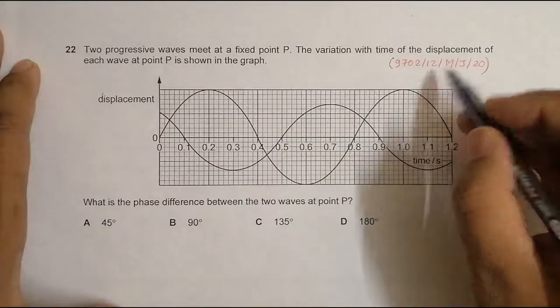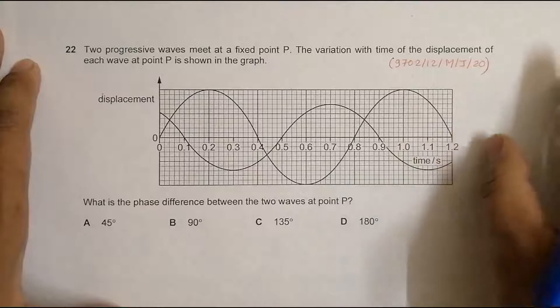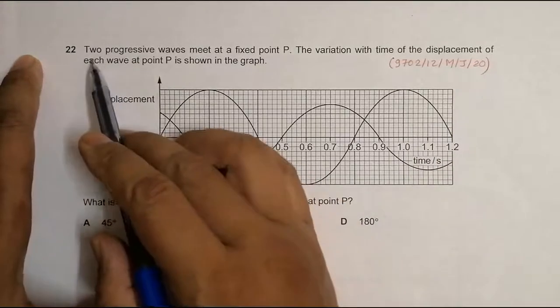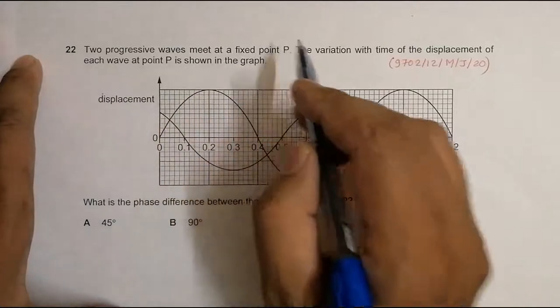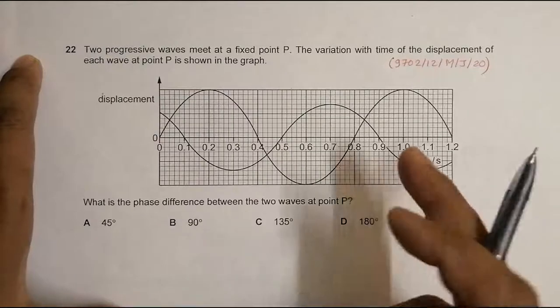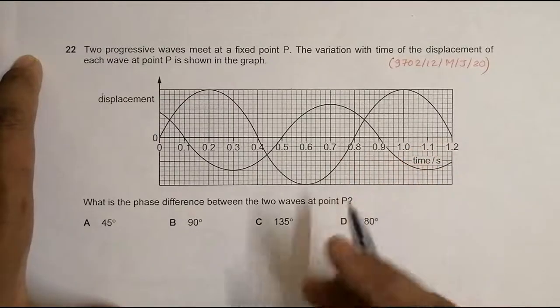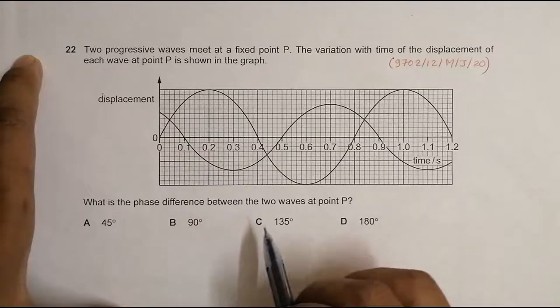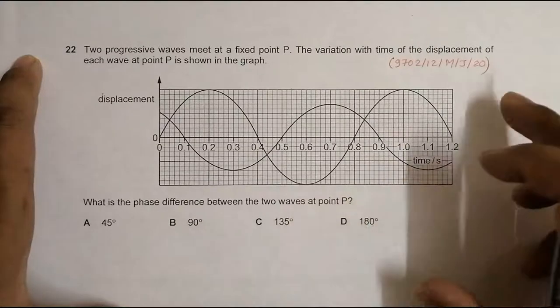Hello folks, this is 2020 May June paper 1, question number 22. It is about two progressive waves meeting at a fixed point P. The variation with time of the displacement of each wave at point P is shown in the graph. What is the phase difference between the two waves at point P? We have to find the phase difference.